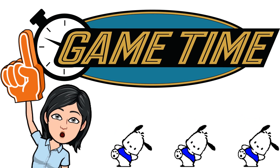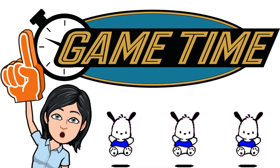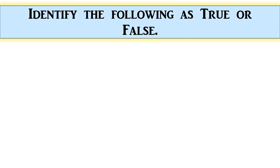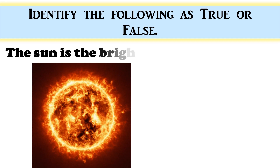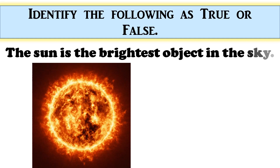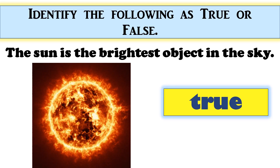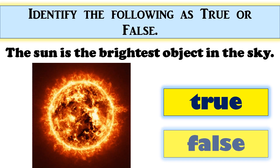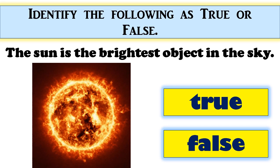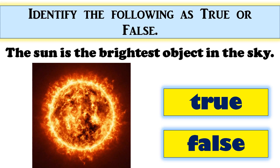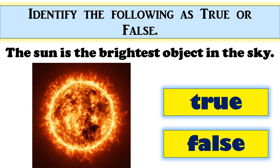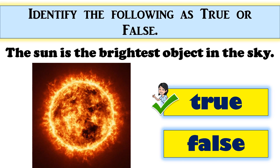Identify the following as true or false. The sun is the brightest object in the sky. True or false? The correct answer is TRUE. Very good!